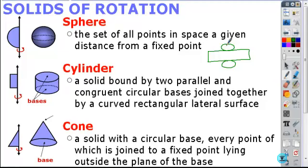And then finally a cone, the, again the right triangle. But the definition is just a solid with a circular base, every point of which is joined to a fixed point lying outside the plane of that base. And that fixed point is still called a vertex.